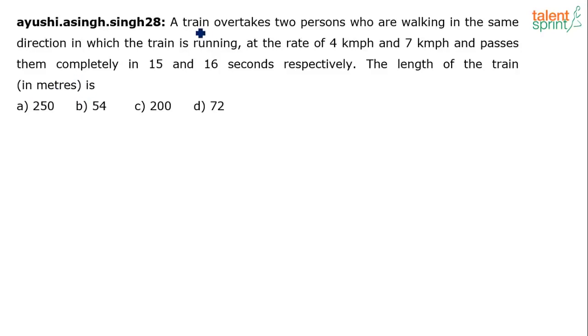So basically it's talking about a train which overtakes two persons who are walking in the same direction in which the train is running at 4 km per hour and 7 km per hour respectively and passes them in 15 and 16 seconds respectively. So there are two different cases: train overtaking person 1 who is walking at 4 km per hour in 15 seconds, and the train overtaking person 2 walking at 7 km per hour in 16 seconds. Based on this we have to find out the length of the train.